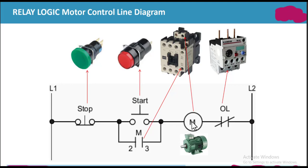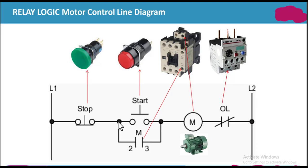When we press the start switch, current can flow to this motor. This motor is connected with this contactor, and current can pass through this contactor. When current passes through this contactor, it will become energized, and its normally open contact will be closed.